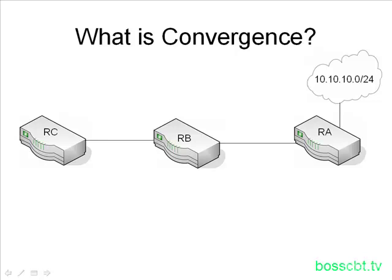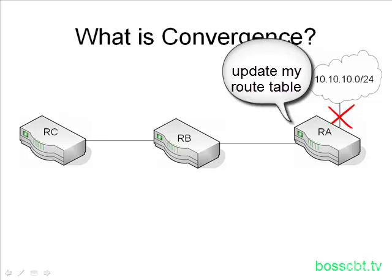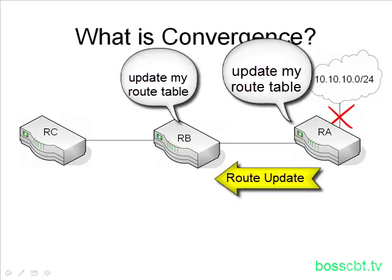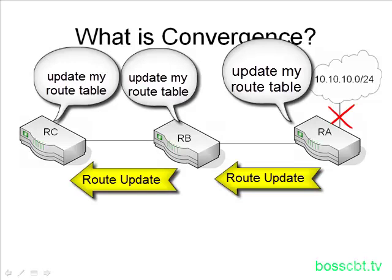When a change occurs, that information is advertised via routing protocols, and depending on the change, route tables are updated to reflect that change. So perhaps an old route which has failed is now removed, and if there's an alternate route, the new alternate route becomes the best route and is inserted in the routing table. This process of updating all the routers on the network when changes happen is known as convergence.